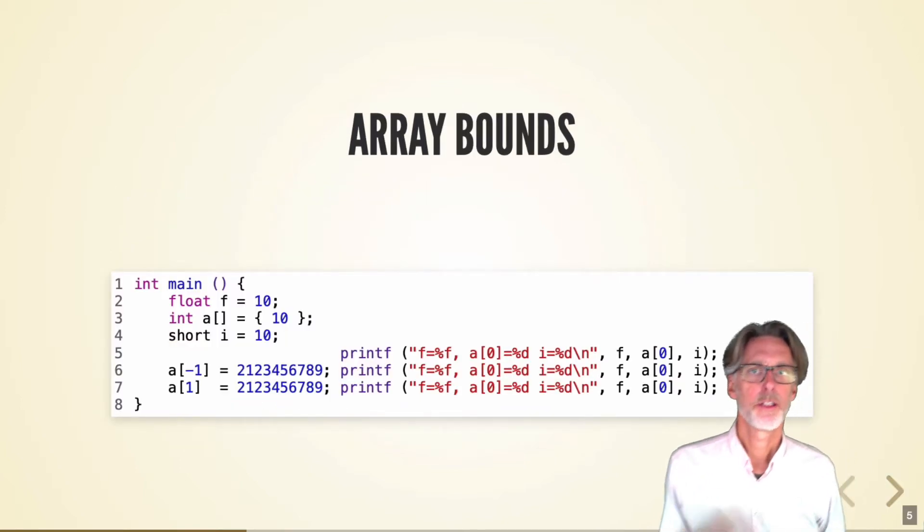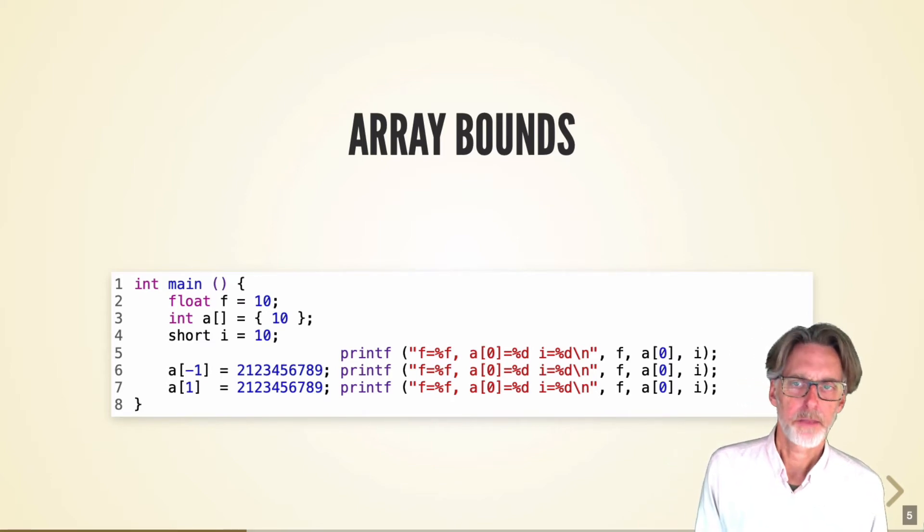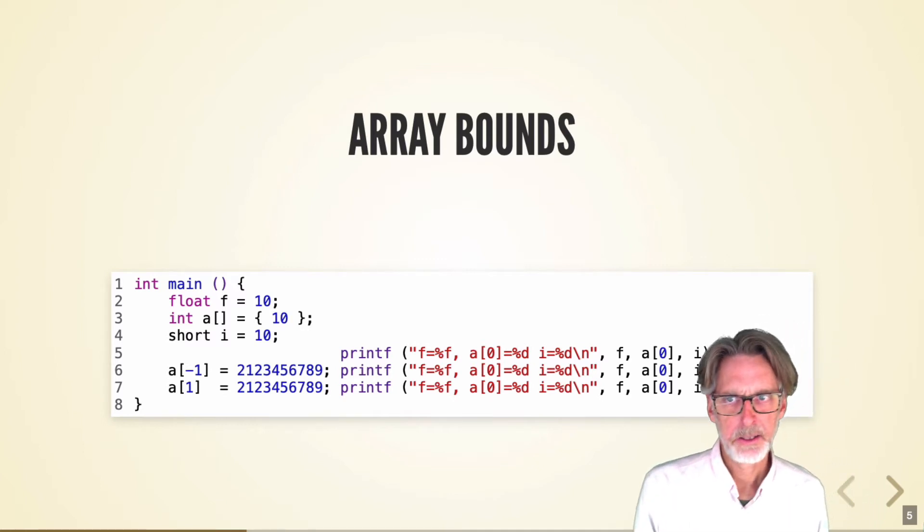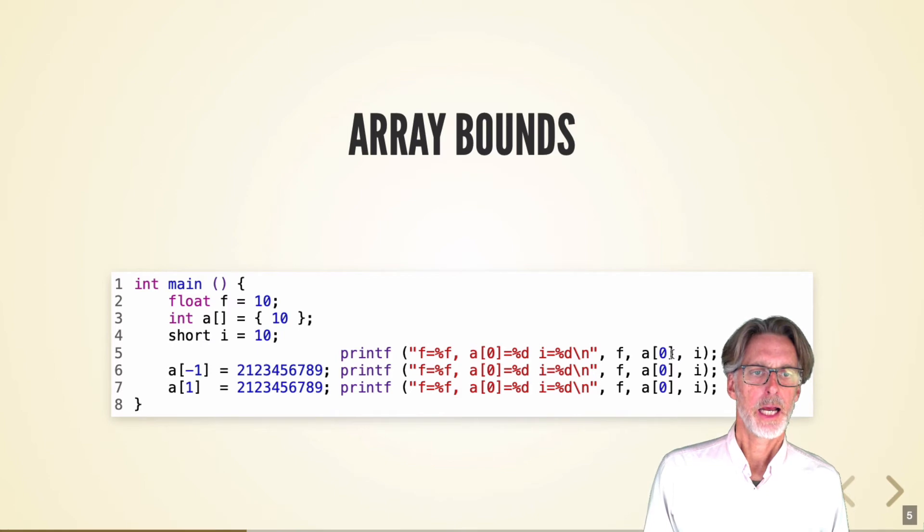There are lots of ways to violate safety in C. Let's just walk through some of them. One thing we can do is violate the bounds of an array. So here I have a floating point number F initialized to 10. I have an array A also initialized to 10. And I have a short I initialized to 10. What I'm going to do is just print these values out three times.